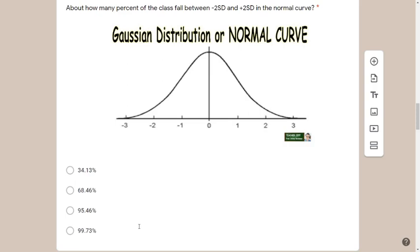We're talking about the Gaussian distribution, also called the normal curve or bell curve. The center is the mean at zero. The numbers to the left are negative 1, negative 2, negative 3, and to the right positive 1, 2, 3 — representing the dispersion or spread. The question asks for the area covered from negative 2 SD to positive 2 SD — imagine shading that entire region.